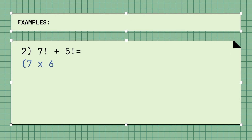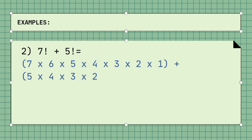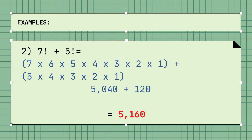Example number 2 involves addition: 7 factorial plus 5 factorial. The solution is: 7 factorial equals 7 times 6 times 5 times 4 times 3 times 2 times 1, plus 5 factorial where 5 times 4 times 3 times 2 times 1. That gives 5,040 plus 120, for a total of 5,160.